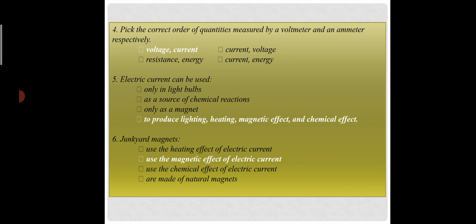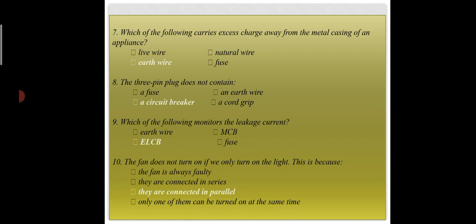Question 6: junkyard magnets use the magnetic effect of electric current. Question 7: the earth wire carries excess charge away from the metal casing of an appliance. Question 8: a three-pin plug does not contain a circuit breaker — the ELCB monitors leakage current. Question 9: the fan does not turn on if we only turn on the light, because they are connected in parallel, so there are multiple loops and the same voltage is applied to all circuits.